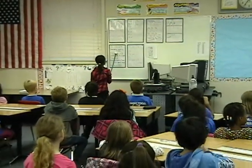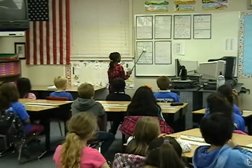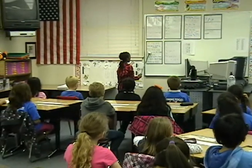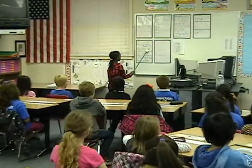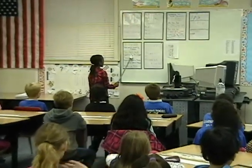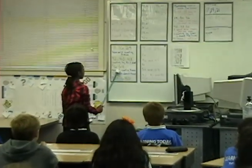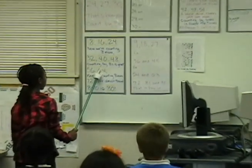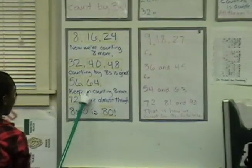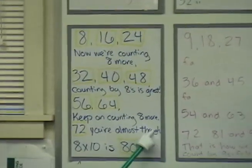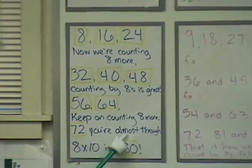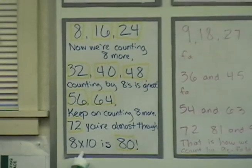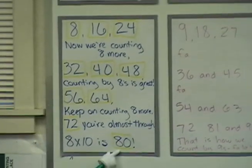8, 16, 24, now we're counting 8 more. 32, 40, 48, counting by 8's is great. 56, 64, keep on counting 8 more. 72, you're almost through. 8 times 10 is 80. Woo!